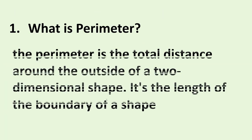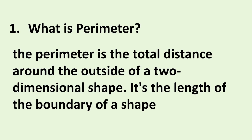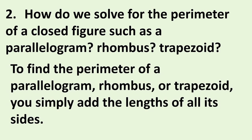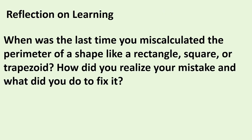What is perimeter? The perimeter is the total distance around the outside of a two-dimensional shape — it's the length of the boundary of a shape. How do we solve for the perimeter of a closed figure such as a parallelogram, rhombus, or trapezoid? To find the perimeter, you simply add the length of all its sides. When was the last time you miscalculated the perimeter of a shape like a rectangle, square, or trapezoid? How did you realize your mistake and what did you do to fix it?